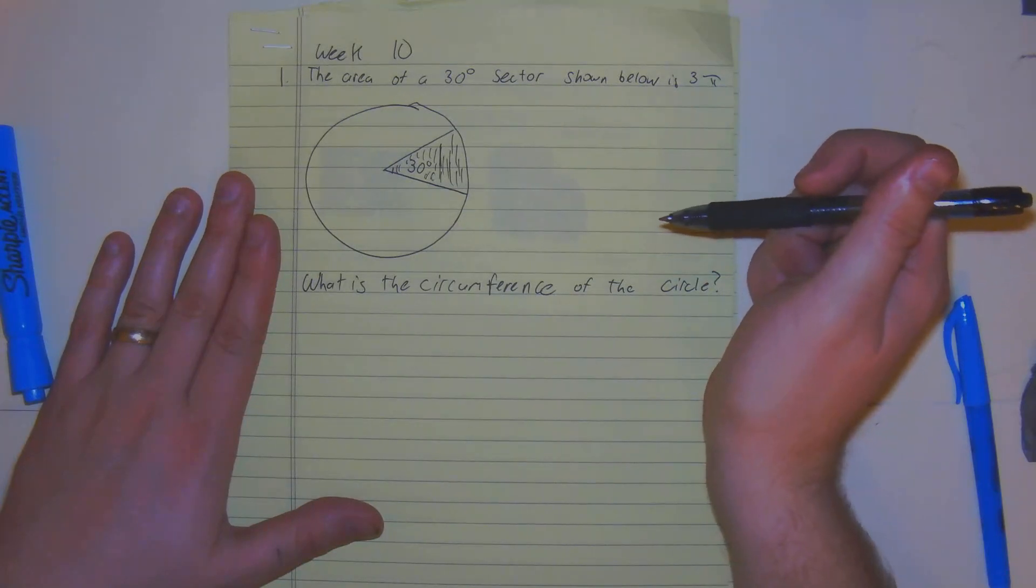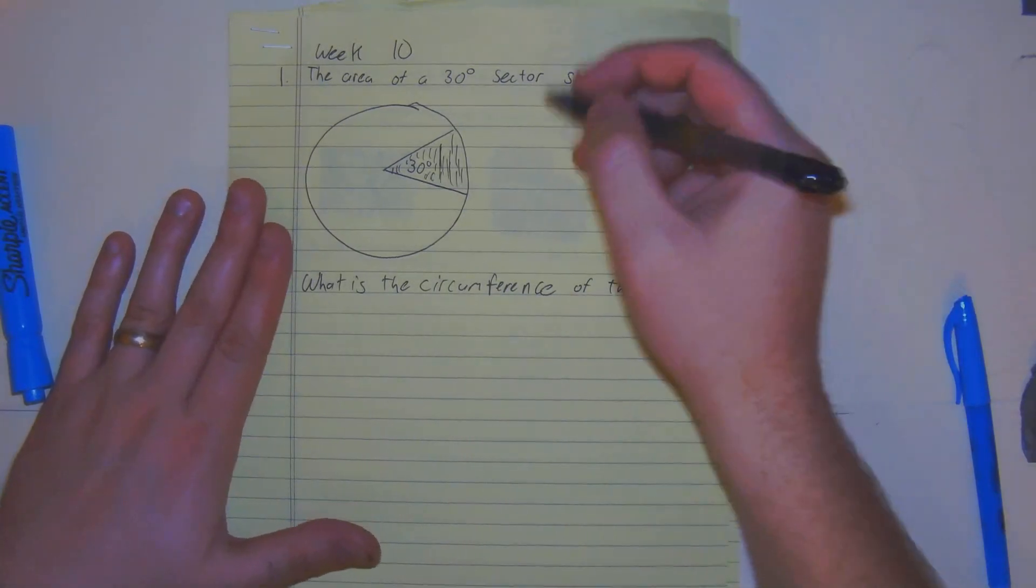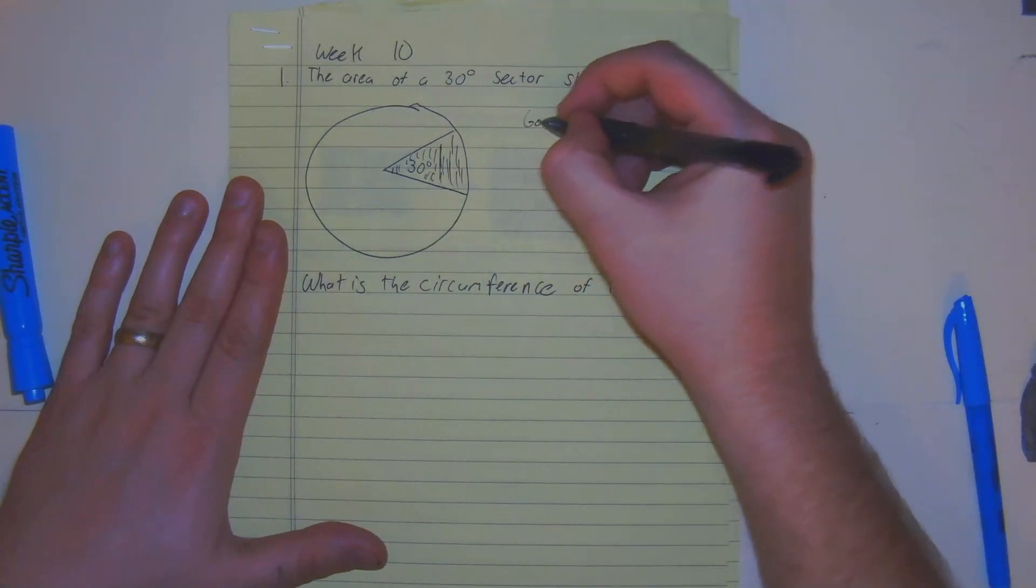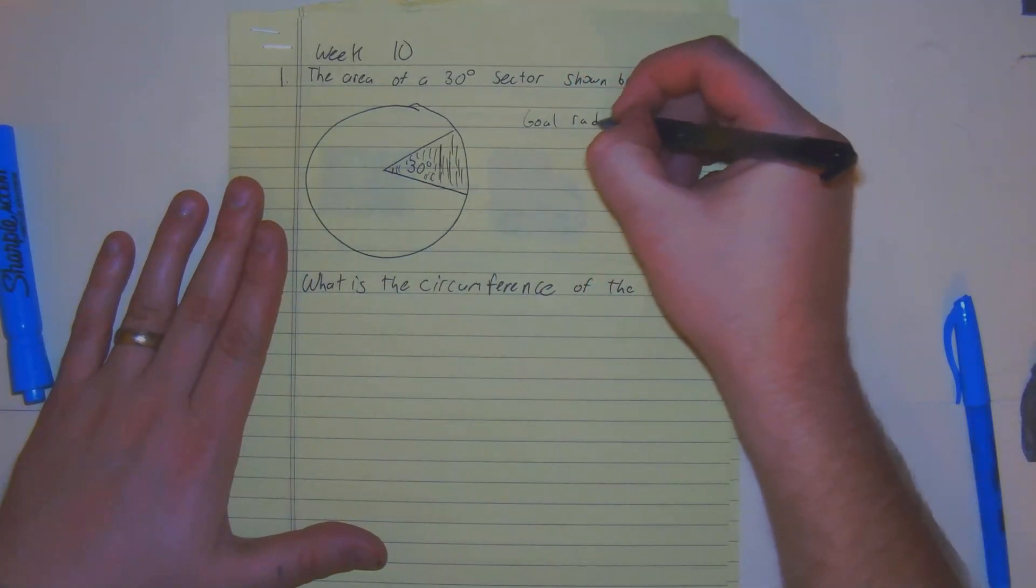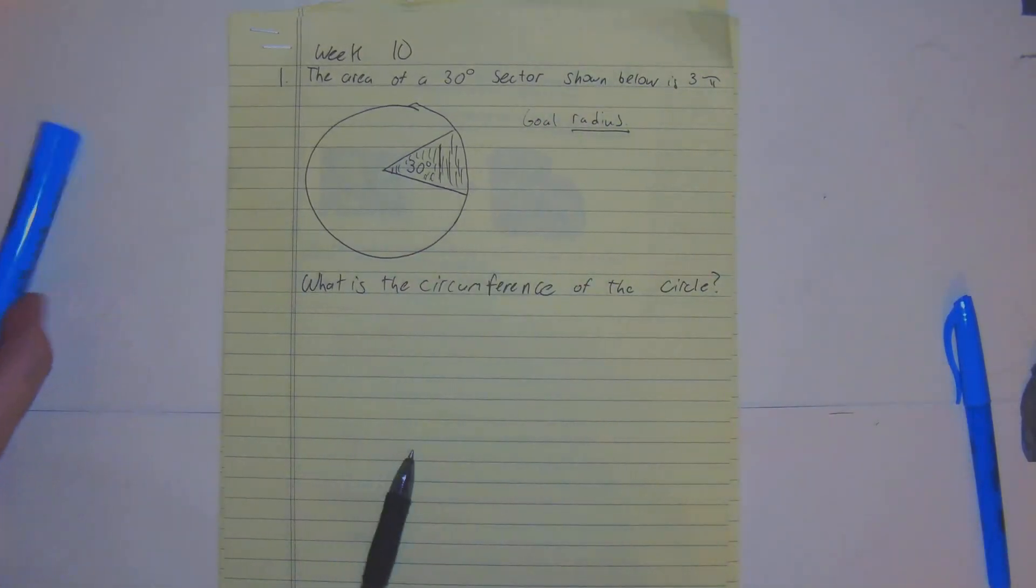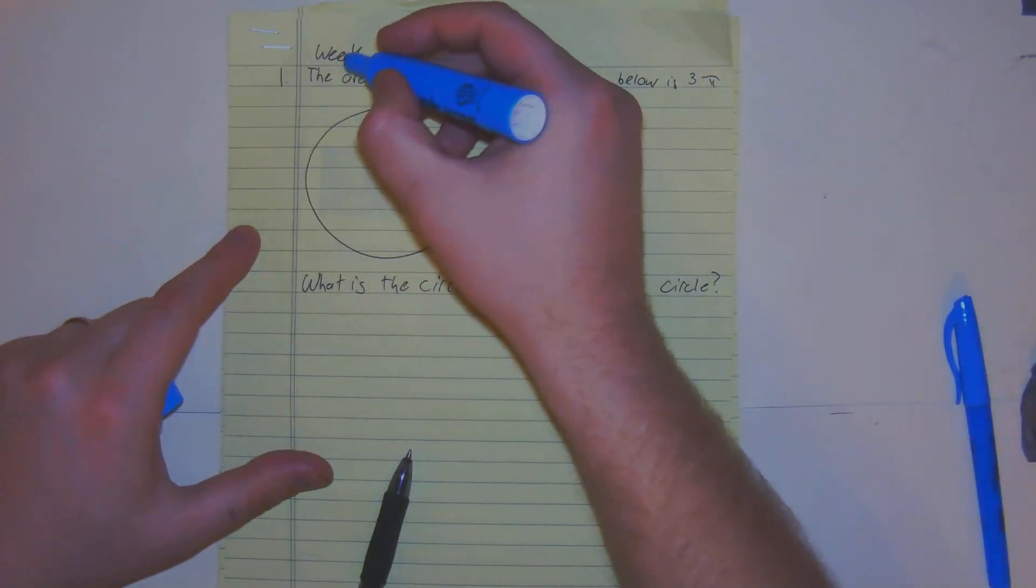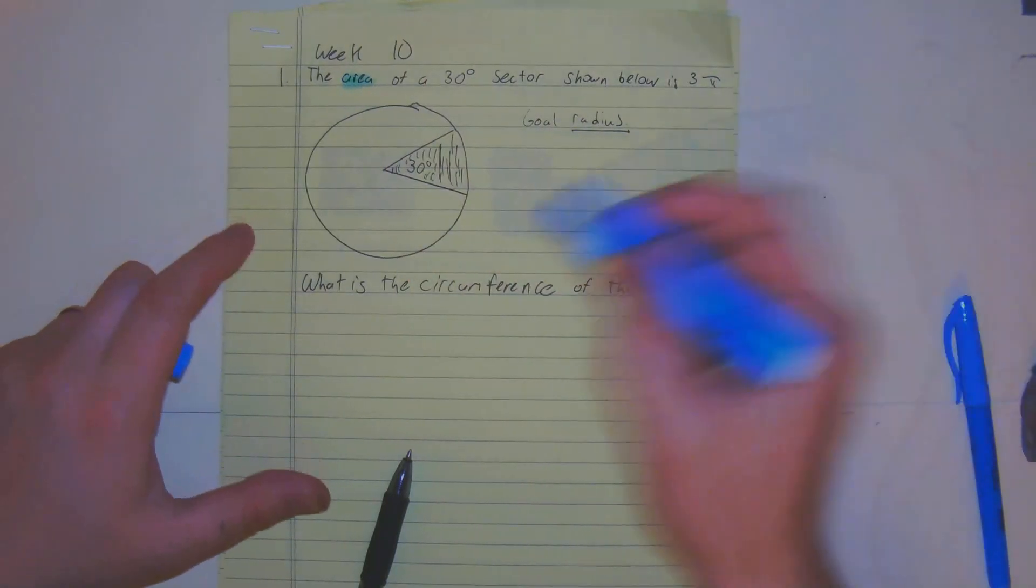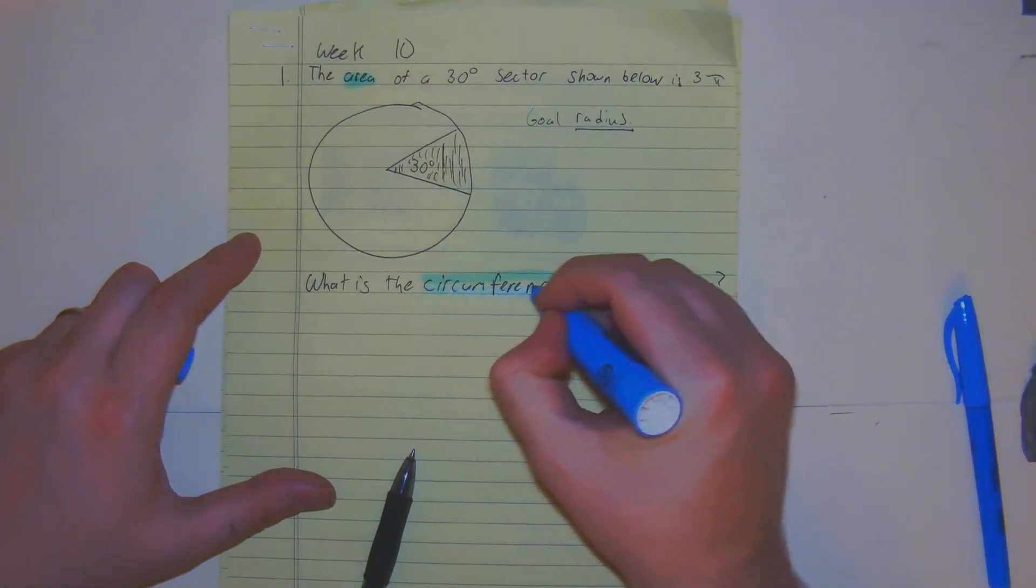The way I would do this, let's first find what the radius is. Goal is the radius. Because they're giving us the area, but we want to find the entire circumference.